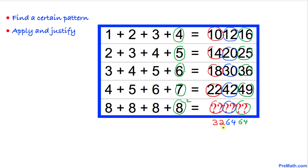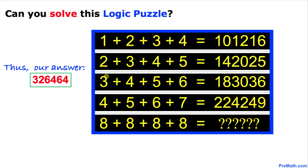Eight squared is 64, so the last two digits are 64. Our complete answer turns out to be 32 64 64. Thanks for watching and please don't forget to subscribe to my channel for more exciting videos. Bye!